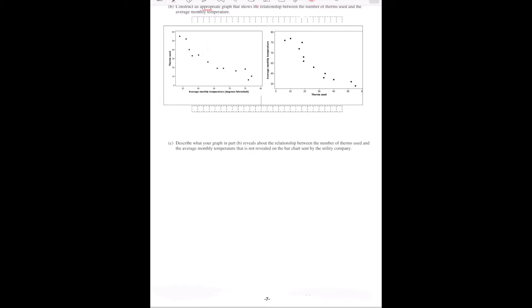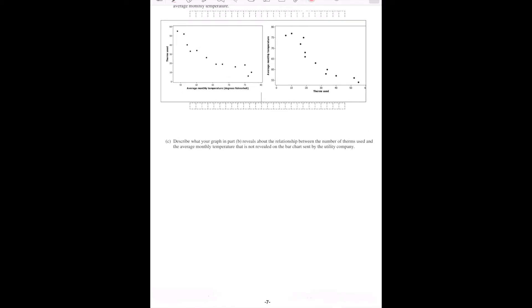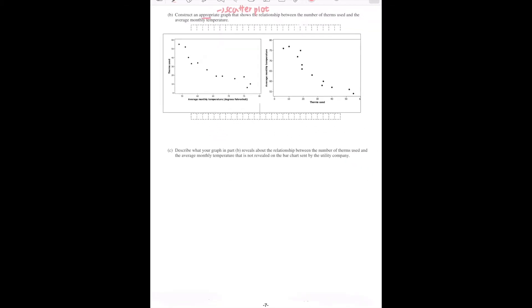Describe what your graph in part B reveals about the relationship between the number of therms used and the average monthly temperature that is not revealed on the bar chart sent by the utility company. Well, over here, you need to have some requirements in your answer. So, if you look at either of those, you can see a general trend, something like this, right?